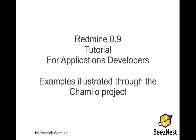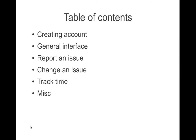Redmine is an issue management system, so it allows you to manage all kinds of things that occur around and inside a software development project. We're going to see how to create an account, how the general interface looks, how to report an issue, how to change the stages of an issue, how to track time, and then a few additional points.